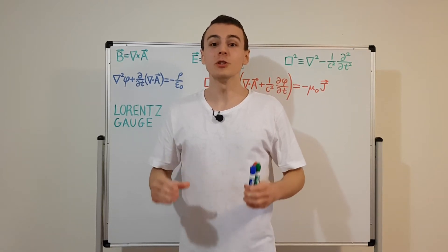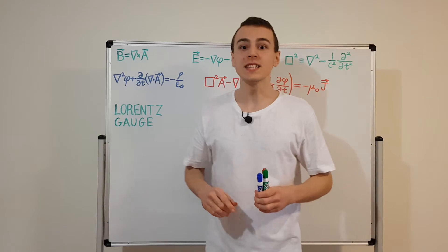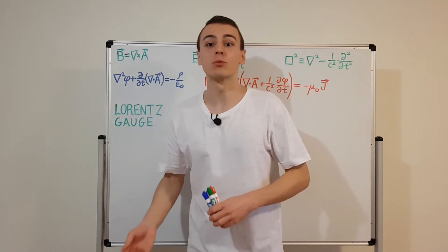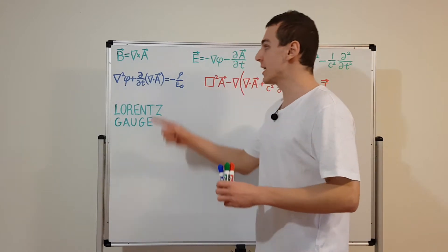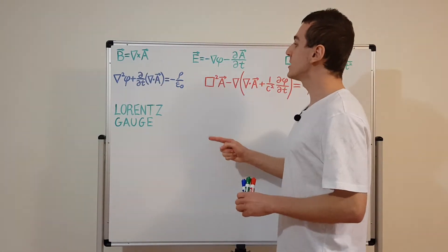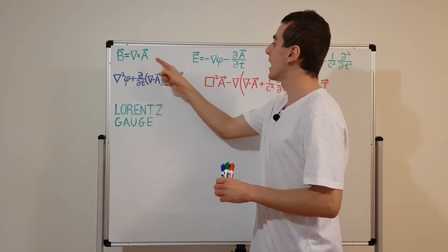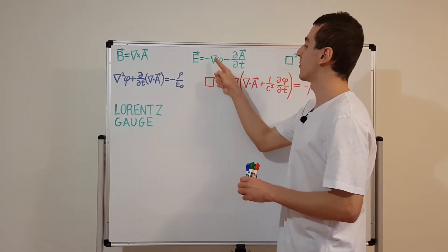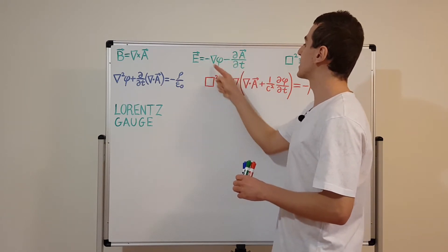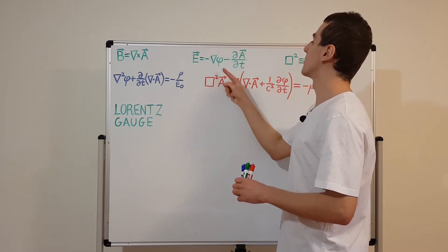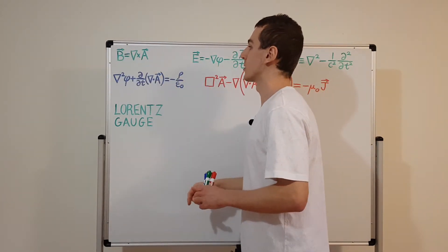In this video I want to introduce the Lorentz gauge. First let's have a look at some of the things I derived in the previous videos in the electromagnetism playlist. In green over here I have written the magnetic and electric fields in terms of the vector and scalar potentials. Phi is the scalar potential and A is the vector potential, and we have expressions that allow us to convert from phi and A into the electric field and the magnetic field.